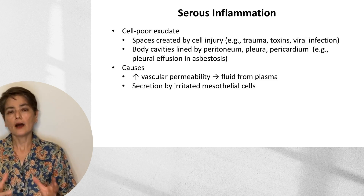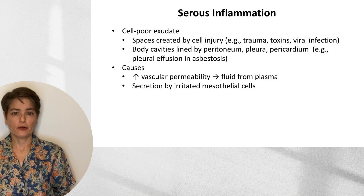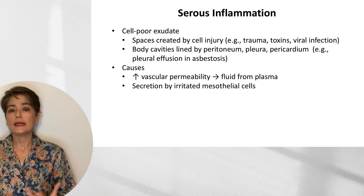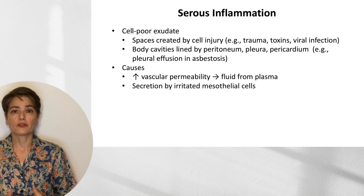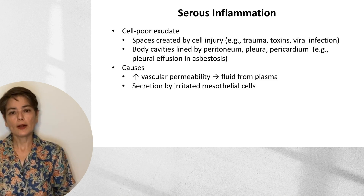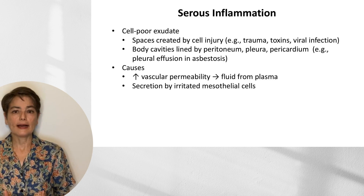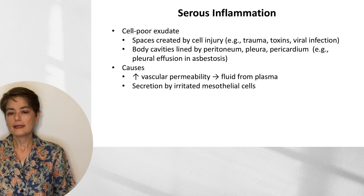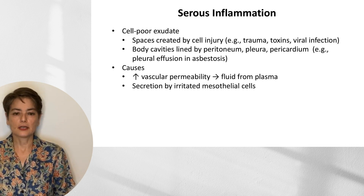Depending on which of these sites is involved, the causes differ. In spaces created by cell injury, that fluid is due to increased vascular permeability and comes from the plasma. By contrast, in the body cavities lined by peritoneum, pleura, and pericardium, that fluid is secreted by irritated mesothelial cells. Let's take a look at the histology.